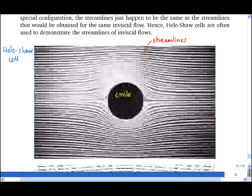Now, in this very special configuration, one can write the velocity field as the gradient of some potential function. And the rather nice thing is that in an inviscid flow, one can also write the velocity field as the gradient of some potential function. And for the same boundary conditions, the two flows have the same solution.